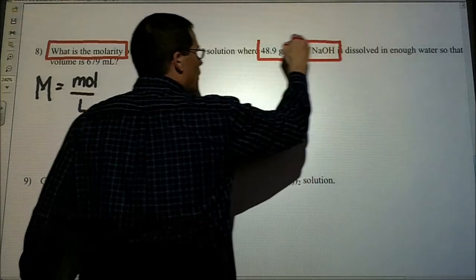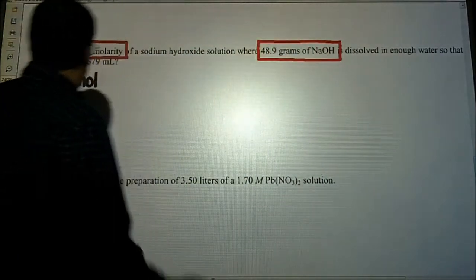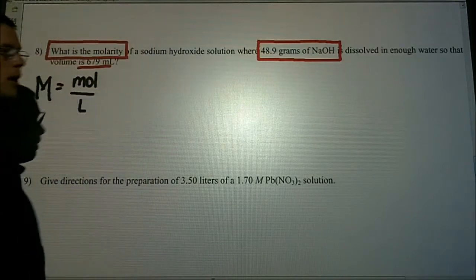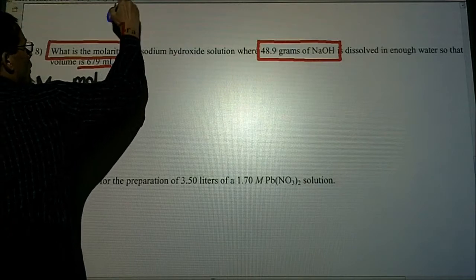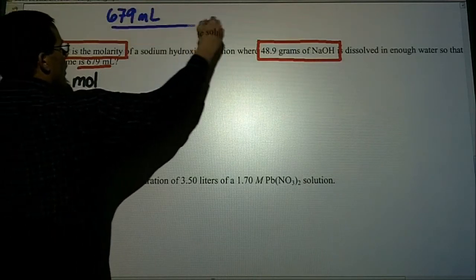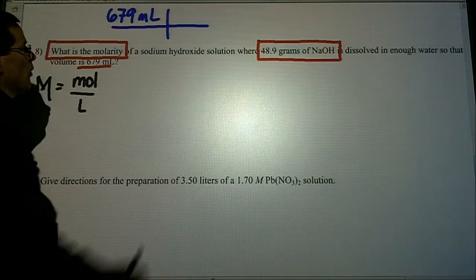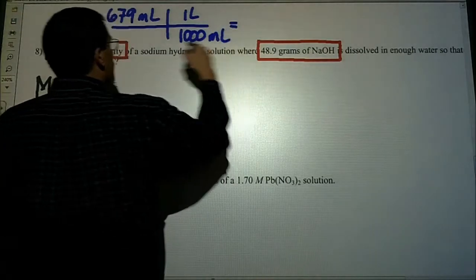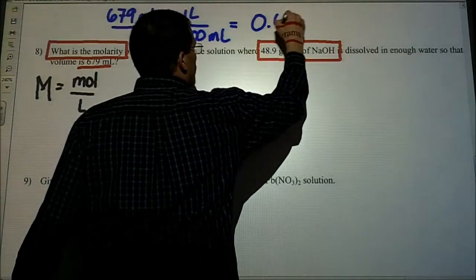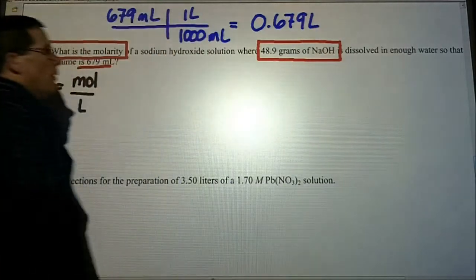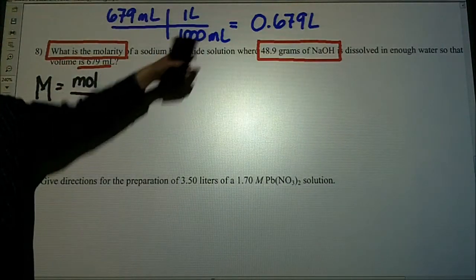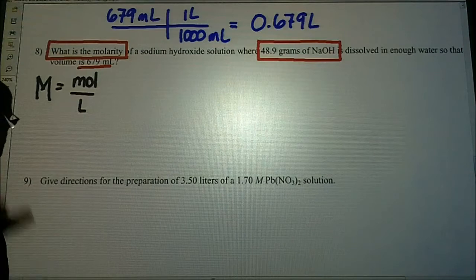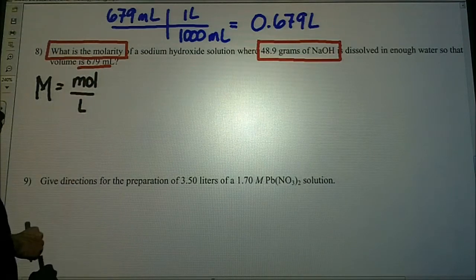We are given 48.9 grams of sodium hydroxide, and it's dissolved in enough water where our volume is 679 milliliters. Some of you may need to do a little sidebar to convert your milliliters. 679 milliliters, how many milliliters in a liter? That's right, 1,000. So really you're just moving the decimal place over three times. It's 0.679 liters. I'm not requiring you to show that step. I would hope that you could do a conversion of 1,000 milliliters in one liter.